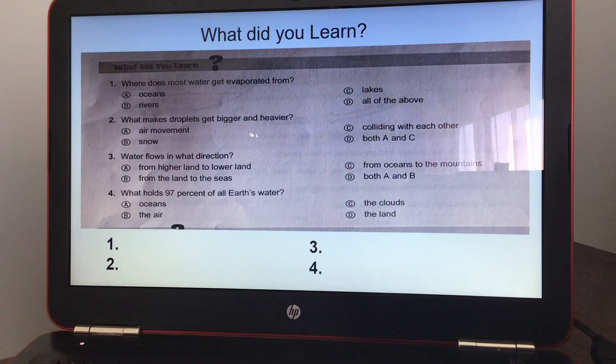What makes droplets get bigger and heavier? Is it A, air movement, B, snow, C, colliding with each other, or D, both A and C? So your answer should have been D, both A and C for number two.